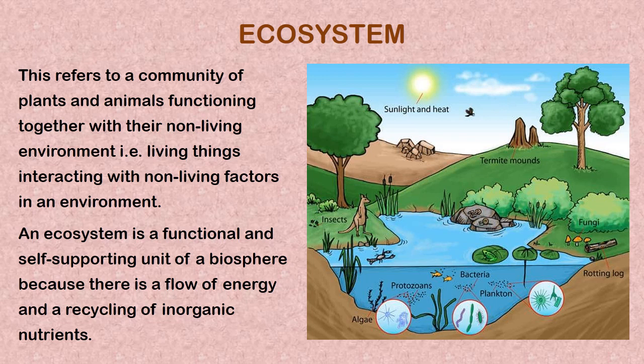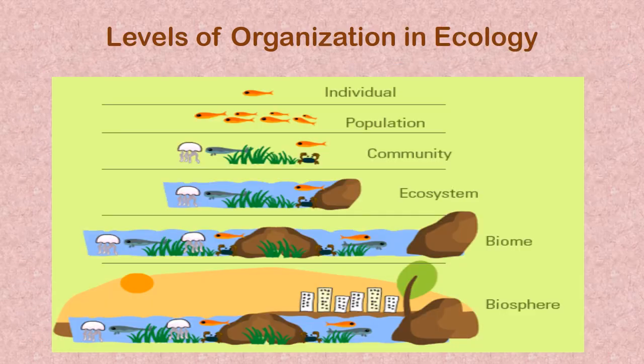Now let's look at the concept of the ecosystem. The ecosystem refers to the community of plants and animals functioning together with their non-living environment. As you can see in this picture, we have living components — trees, birds, microbes, and insects — and non-living components like sunlight, heat, water, and soil, all working together in the ecosystem. An ecosystem is a functional and self-supporting unit of the biosphere because there is a flow of energy from one living organism to another, and also a recycling of inorganic nutrients.